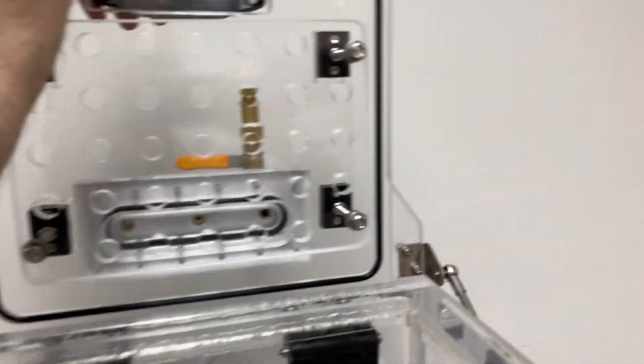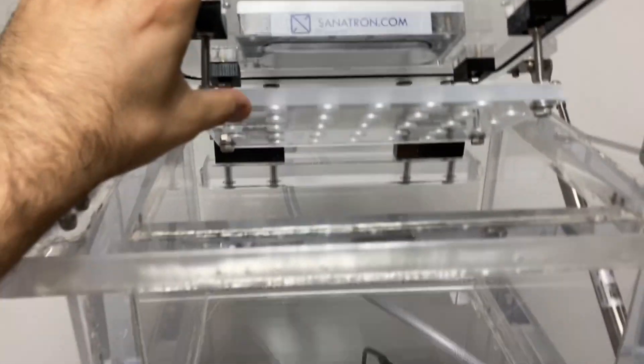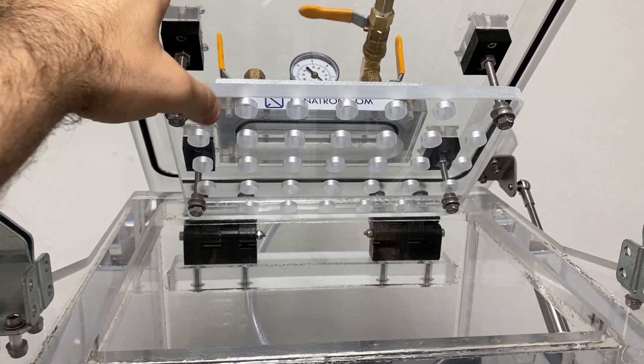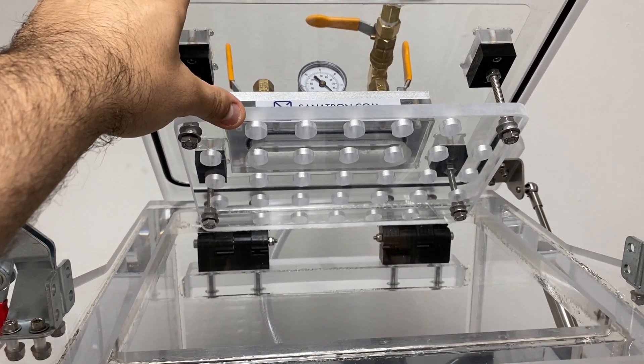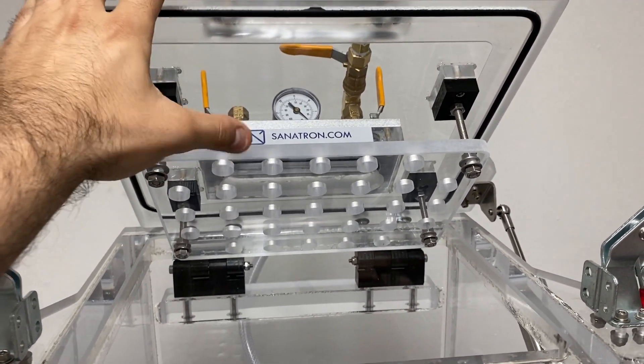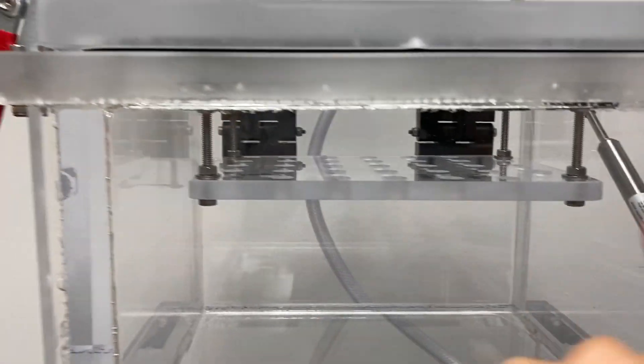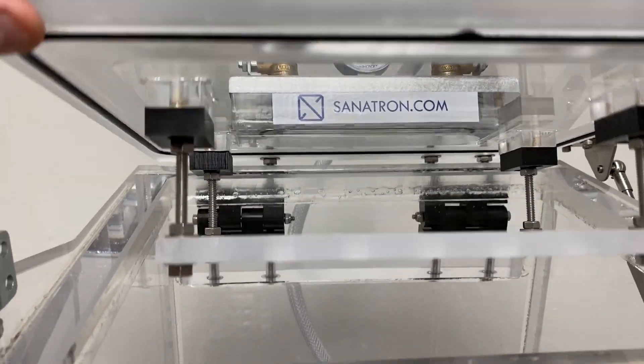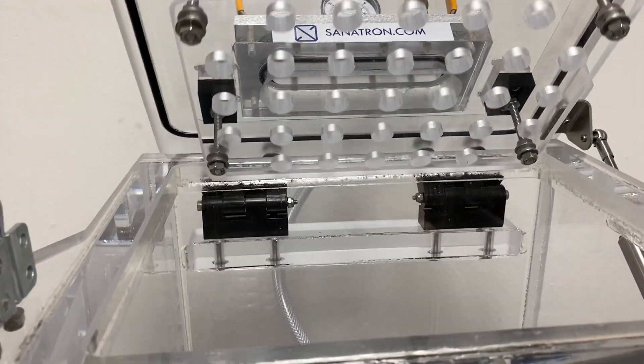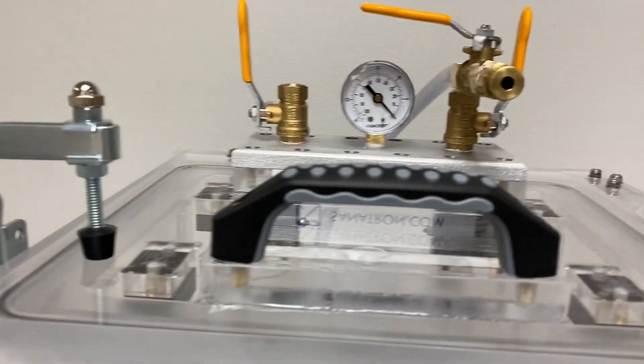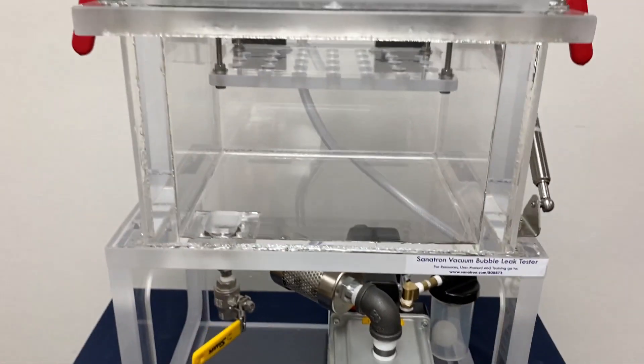Let me open up this lid and show you what else we have. This is a package restraining mesh, and what this mesh does is keep your specimen submerged in the water. If you ever pull a vacuum on a pouch or something that has air in it, it will expand and start floating upwards to the water surface. This prevents it from floating by keeping it submerged. This mesh is removable and adjustable, so you can adjust it and add longer spacers or shorter spacers.